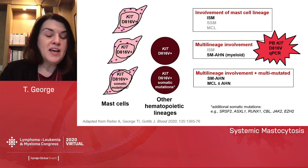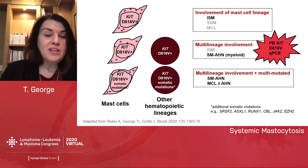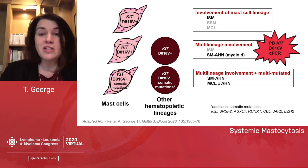Here's another way to think about it. You have patients who have the KIT-D816V mutation only in the mast cell lineage. Most of those patients have indolent systemic mastocytosis, with fewer having smoldering or chronic mast cell leukemia. Then there are patients with multi-lineage involvement — KIT-D816V in both mast cells and other hematopoietic lineages — typically systemic mastocytosis with an associated hematologic neoplasm, usually myeloid disorders.